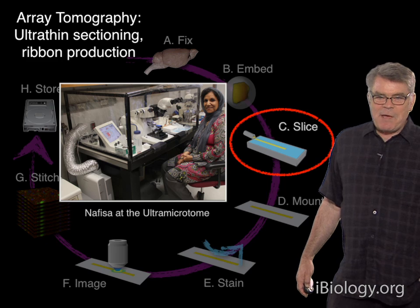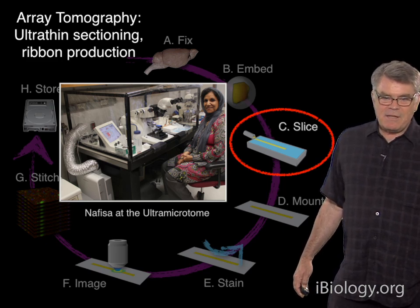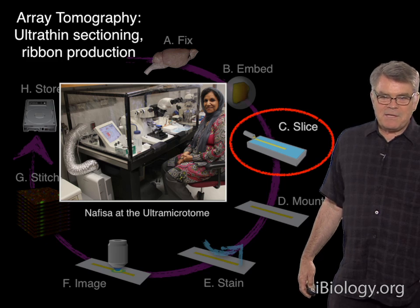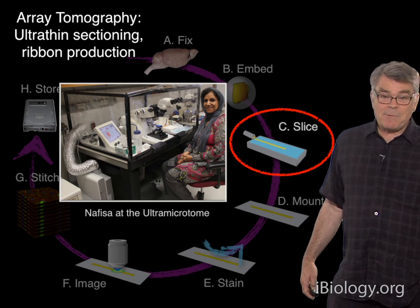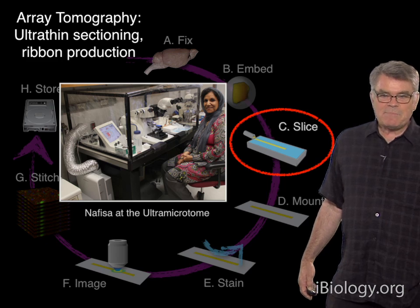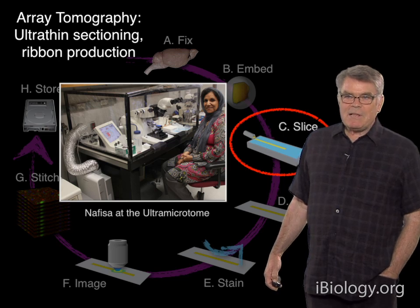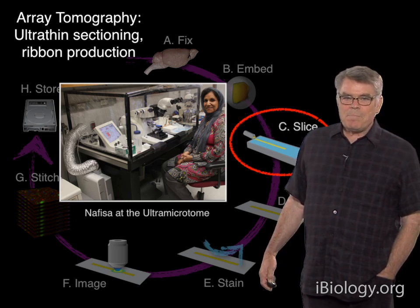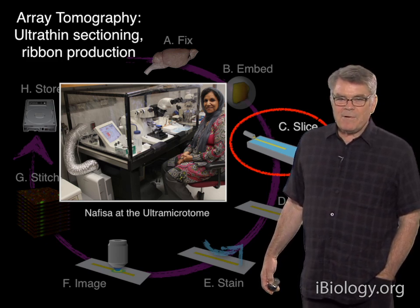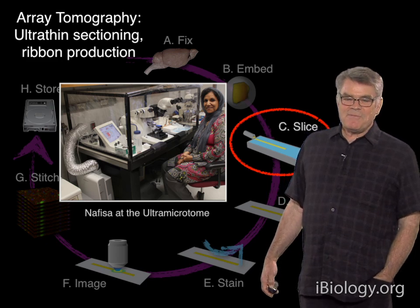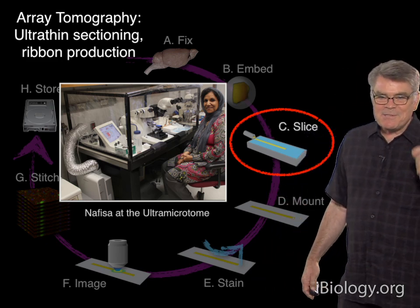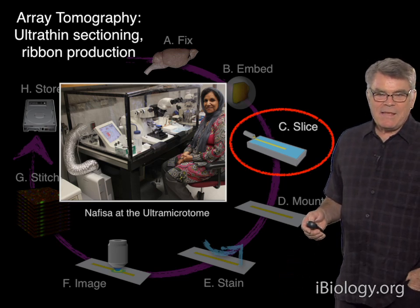Perhaps you've seen an ultramicrotome around. There's one in the picture along with our wonderful technician, Nafisa, who is our expert at working this particular tool. It is a tool that electron microscopists have been evolving for over half a century and is really quite spectacularly refined in its present form. It is capable of cutting a block of tissue embedded in resin in sections that are as thin as 40 or even 30 nanometers — and that's really where a lot of the magic in array tomography comes from.